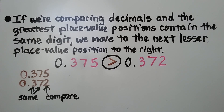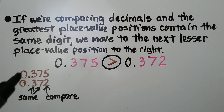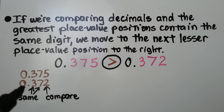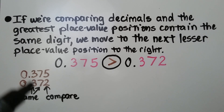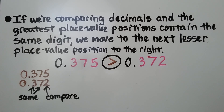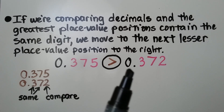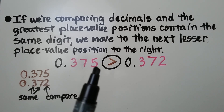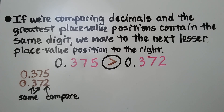If we're comparing decimals and the greatest place value positions contain the same digit, we move to the next lesser place value position to the right. Comparing these two decimals, they both have a 0 in the ones place, a 3 in the tenths place, and a 7 in the hundredths place, so we compare their thousandths. 375 thousandths is greater than 372 thousandths because it has a 5 in the thousandths place.